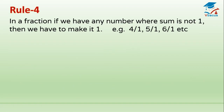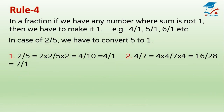Rule 4: In a fraction, if we have any number where the denominator is not 1, we have to make it 1. For example, 4 over 1, 5 over 1, 6 over 1, etc. In case of 2 over 5, we convert 5 to 1 by multiplying the denominator by 2, and we must multiply the numerator by 2 also.